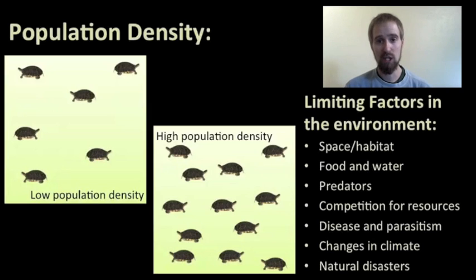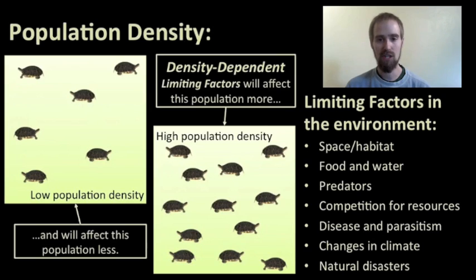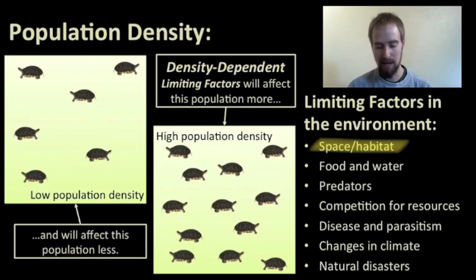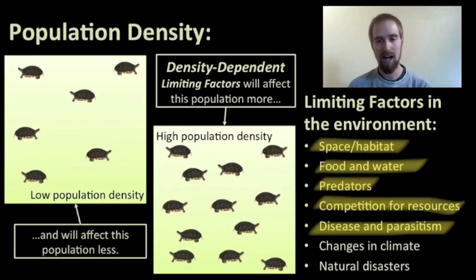Because we live in a finite space, as a population grows in size it's also going to be increasing in population density. As our population of turtles grows from a relatively small population to a bigger one, its population density increases. As that happens, some of these limiting factors become more intense, and we call those density-dependent limiting factors. A high population density of turtles will be more greatly affected by limitations in space and habitat, food and water, predators — they're more obvious to predators because there are more of them — greater competition for resources, and it's easier to spread disease and parasites from one organism to the next when living in high population density.